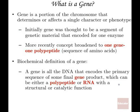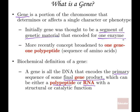We're going to start off the discussion by bringing back some important definitions — the first of which is, what is a gene? There have been several changes in the definition. Most recently, a gene is thought of as a section of DNA that encodes the primary sequence of some final gene product, which can be either a polypeptide or RNA. Initially, back in the 60s, a gene was thought to be a segment of genetic material encoding one enzyme — the one-gene, one-enzyme hypothesis. Then the definition broadened to one gene, one polypeptide, and now RNA is also included.